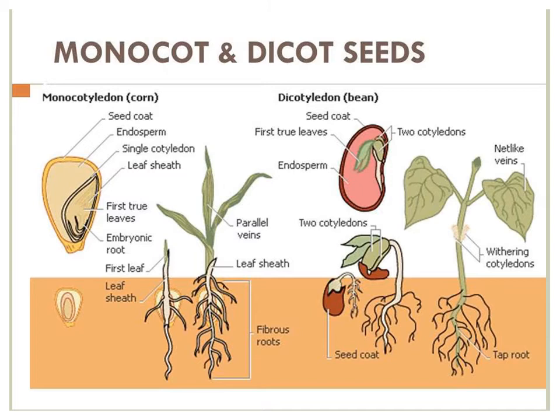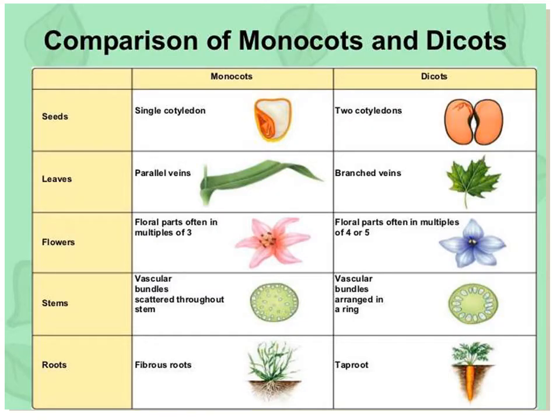You can see in the diagram: in monocot (corn/maize), roots are fibrous, while in dicot (bean), roots are tap roots. Venation in monocots is parallel, but in dicots it is net-like. In monocots you find only one cotyledon; in dicots you find two cotyledons.